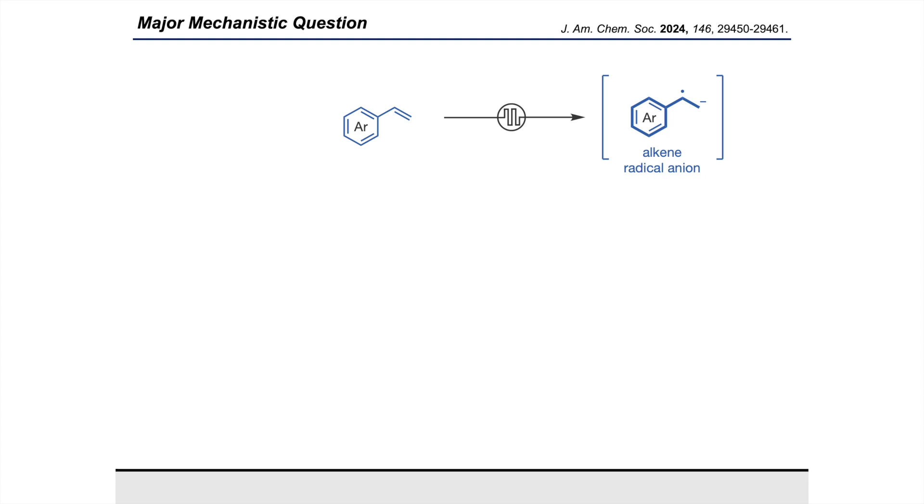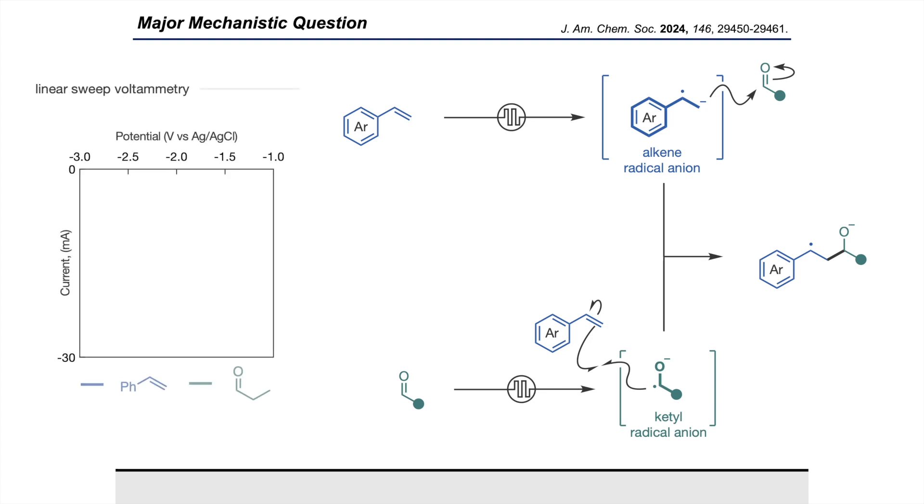From the beginning we presumed that this reaction was occurring through single electron reduction of the alkene component to the corresponding radical anion and then coupling to a neutral aldehyde species. But we acknowledged that this reaction could also proceed via an alternative mechanism where instead the aldehyde component reduced to its ketyl radical and then this underwent a Giese addition to the alkene to give the same product. Indeed, when we ran the linear sweep voltammogram of styrene and propionaldehyde, which are just representative components in this reaction, we observed similar onset reduction potentials between the two species, meaning that the production of both species might have been thermodynamically competitive and that therefore both mechanistic pathways were plausible.